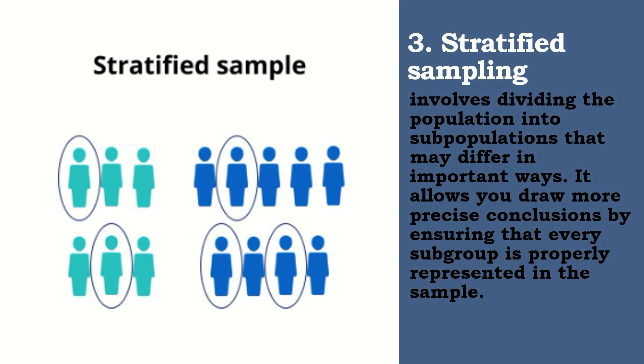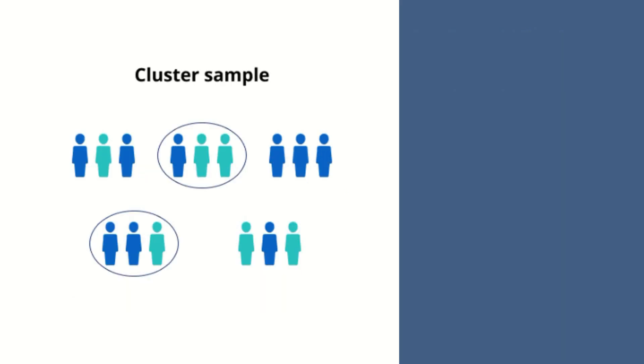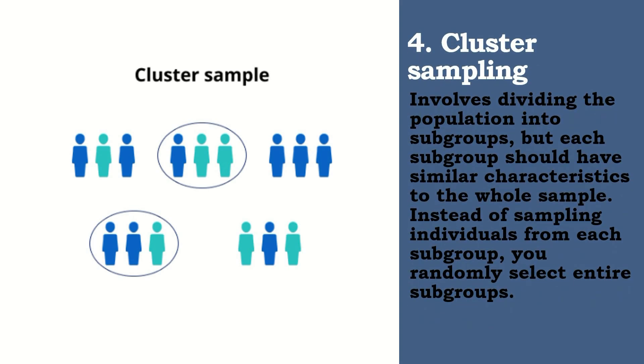The last type of probability sampling is called cluster sampling. In cluster sampling, it involves dividing the population into subgroups, but each subgroup should have similar characteristics to the whole sample. Instead of sampling individuals from each subgroup, you randomly select the entire subgroups.